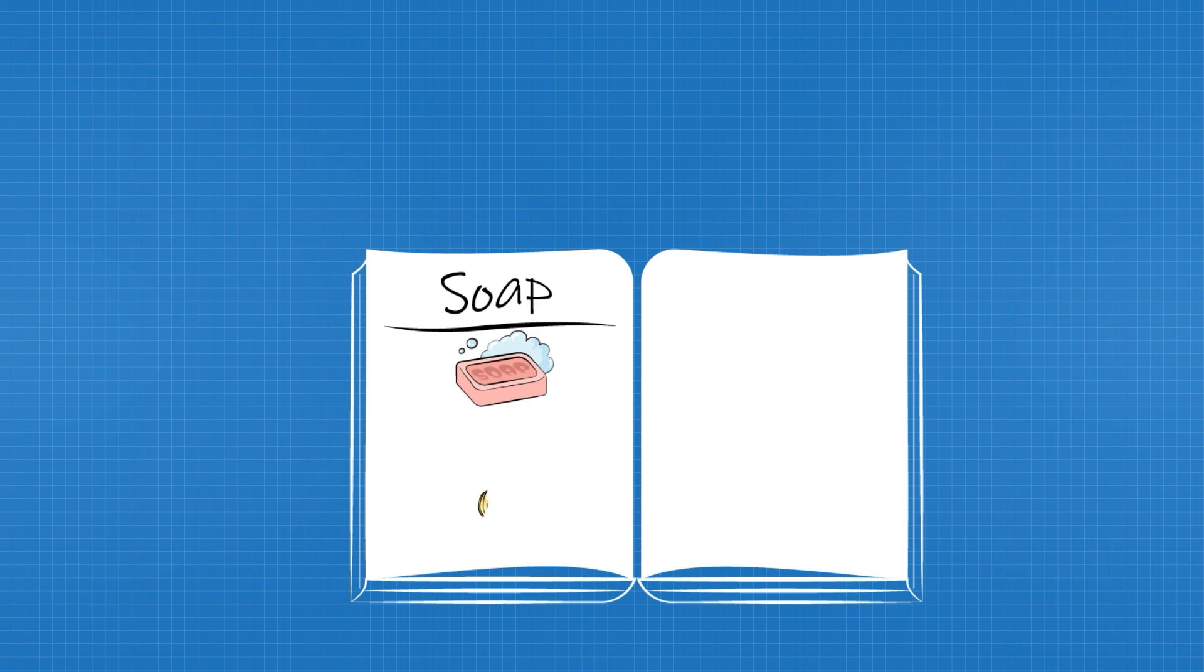Soap is made by combining fat, like vegetable oils or animal grease. Wait, fat to fight oil? Weird. But stick with me. It's about to make sense.